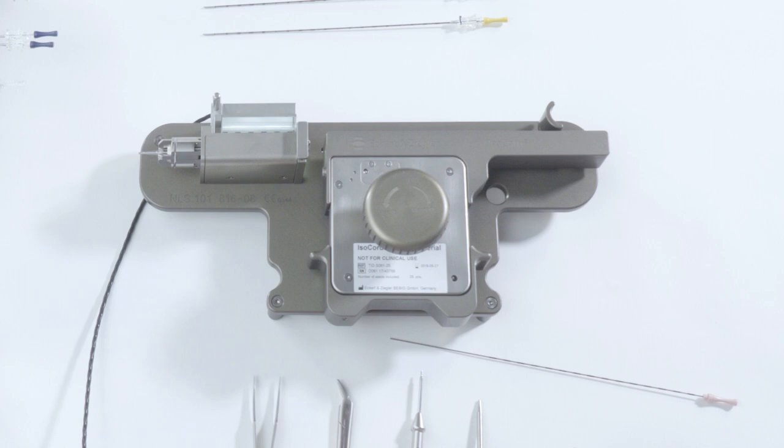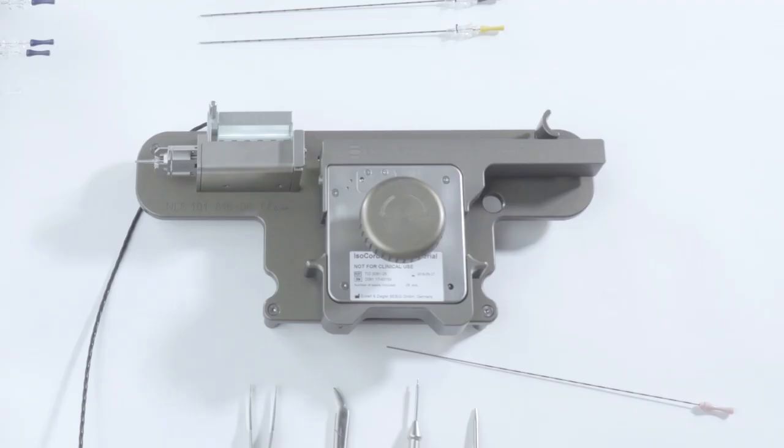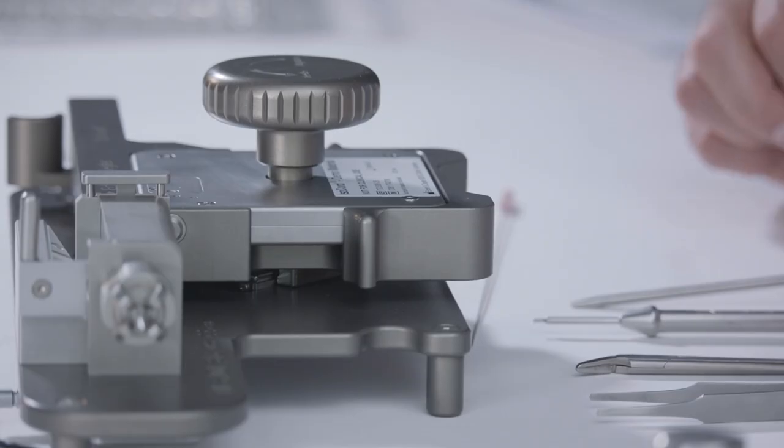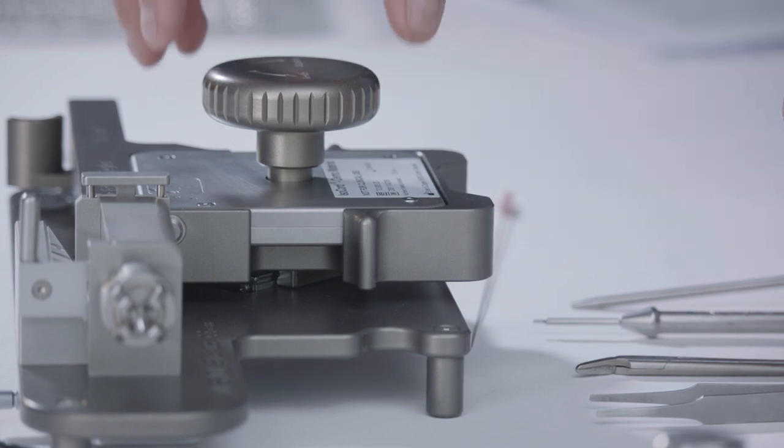When all seeds have been ejected from the magazine or you have prepared all the needles you required, move the magazine holder into the mandrel position. Turn the knob clockwise in the direction marked magazine until the end of the chain is flush with the socket on the magazine holder.